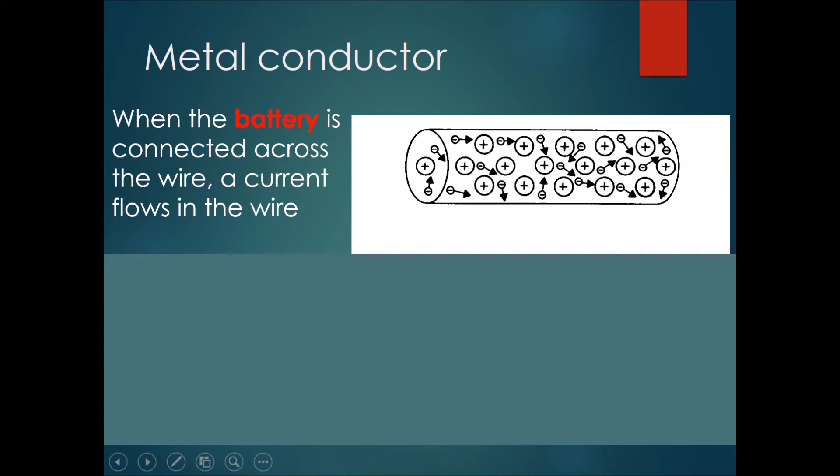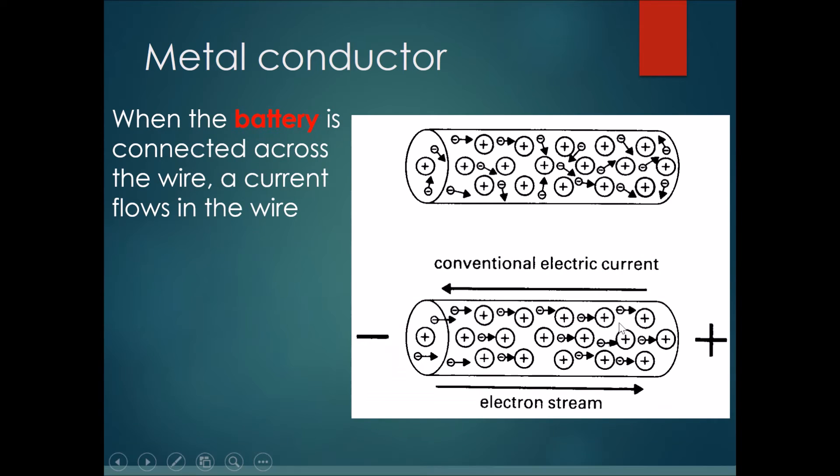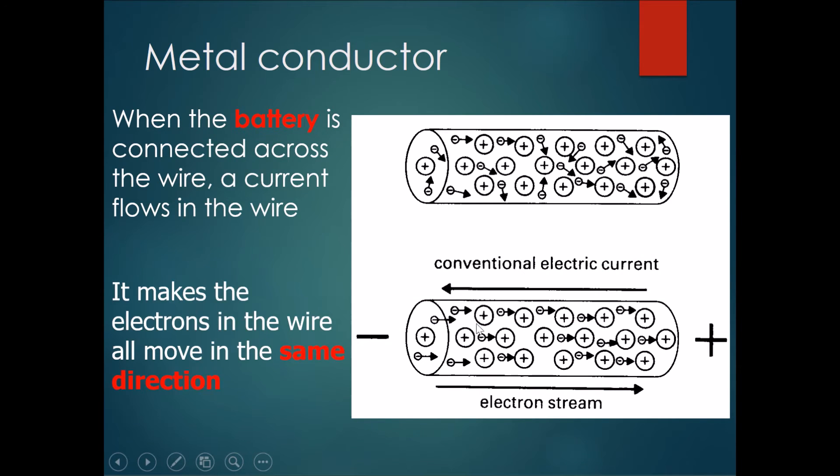when the battery is connected across a wire, imagine it makes the current flow in the wire. Now it makes the electrons in the wire all move in the same direction. So you can see that over here the electrons move haphazardly and randomly. However here they are all now pointing towards the same direction forming an electron stream.